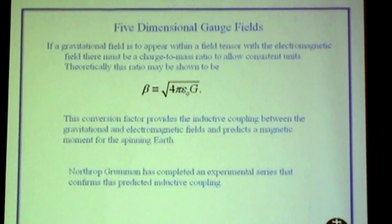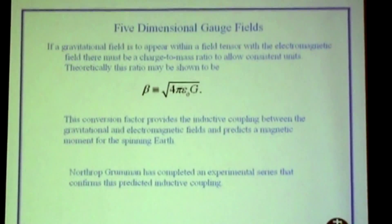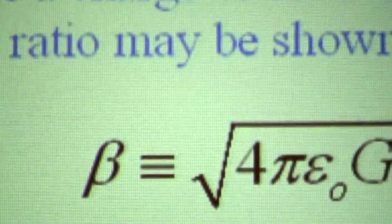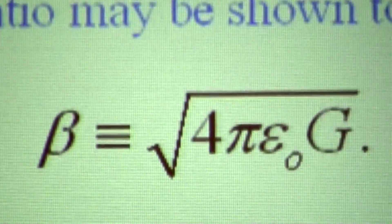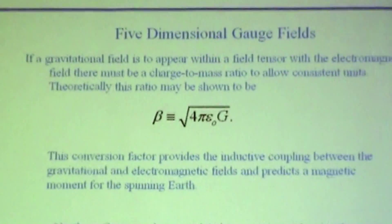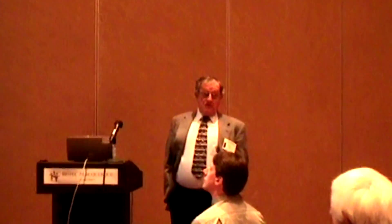If you're going to have gauge fields that tie gravitational and electromagnetic phenomena together, there must be an inductive coupling — just as you can't have an electric wave without a magnetic component associated with it. If they're tied together in such a fashion, you can't have electromagnetic phenomena without gravitational phenomena; therefore there must be some coupling constant. When you look at it theoretically, you find that the charge-to-mass ratio that forms the natural coupling constant between the gravitational and the electromagnetic fields is the square root of the dielectric constant times the gravitational constant. There are some experiments that have already measured this, but those are owned by Northrop Grumman, not myself.